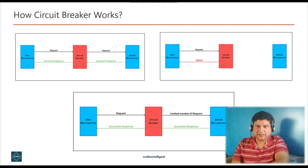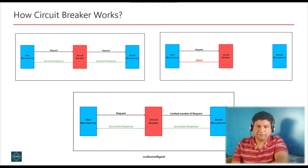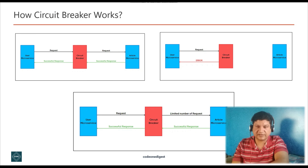In the open state, once the circuit breaker moves to open state, it completely blocks the communication between the microservices. The article service will not receive any requests, and the user service will receive an error from the circuit breaker. The circuit breaker remains in the open state until the timeout period ends, then it moves into half-open state. In the half-open state, the circuit breaker allows a limited number of requests to reach the article service. If those requests are successful, the circuit breaker switches back to closed state and allows normal operation. If not, it again blocks the requests for the defined time period.